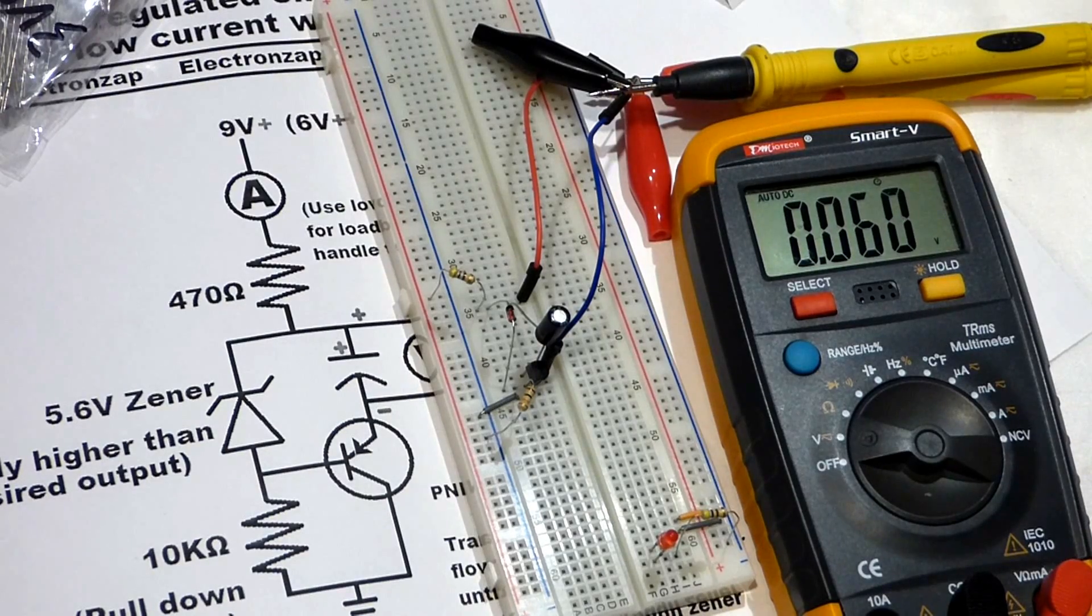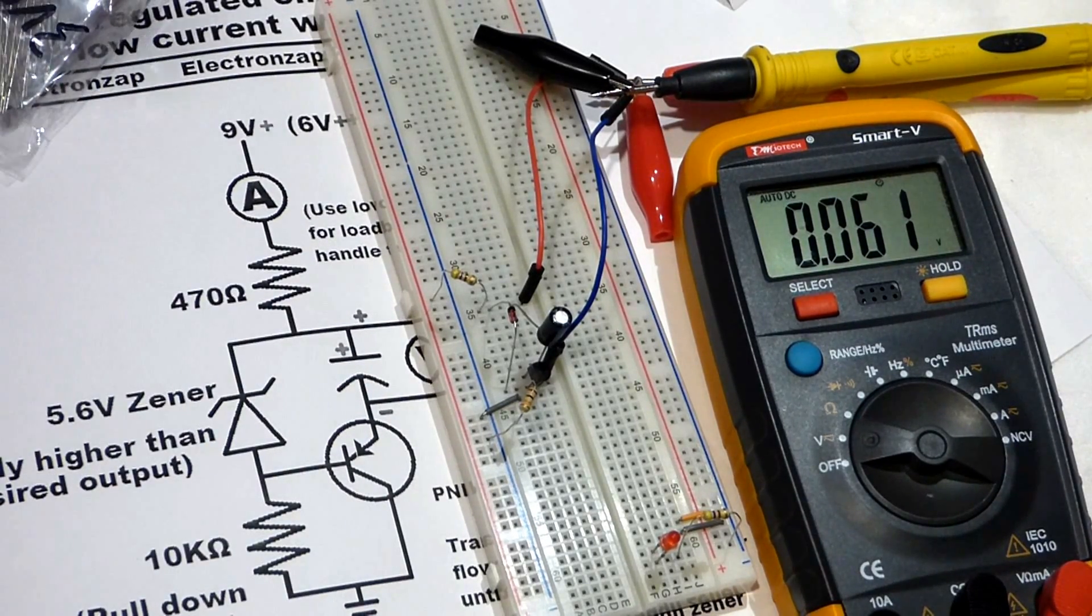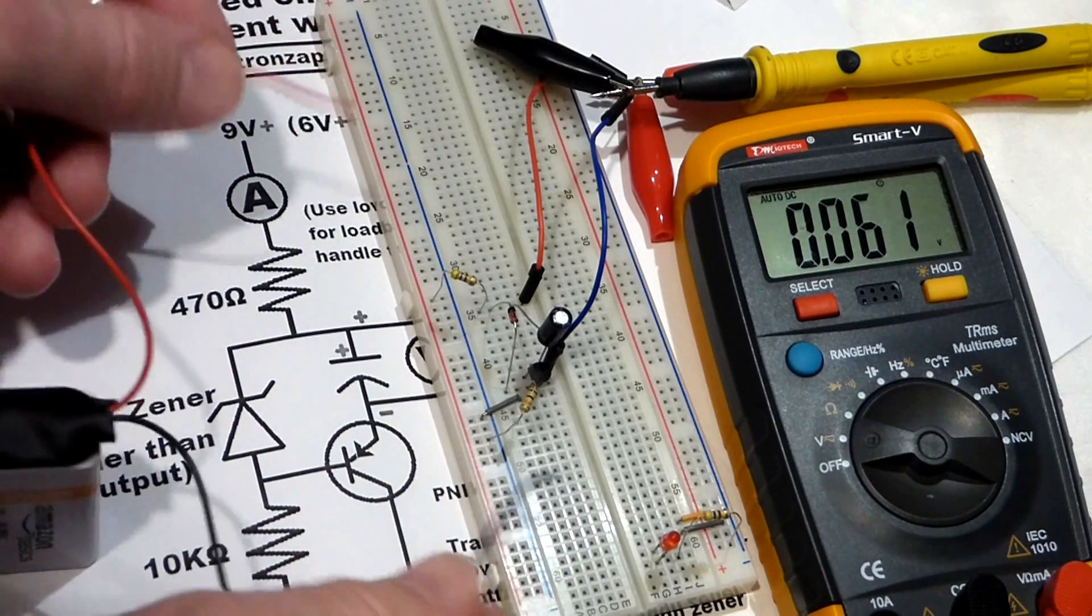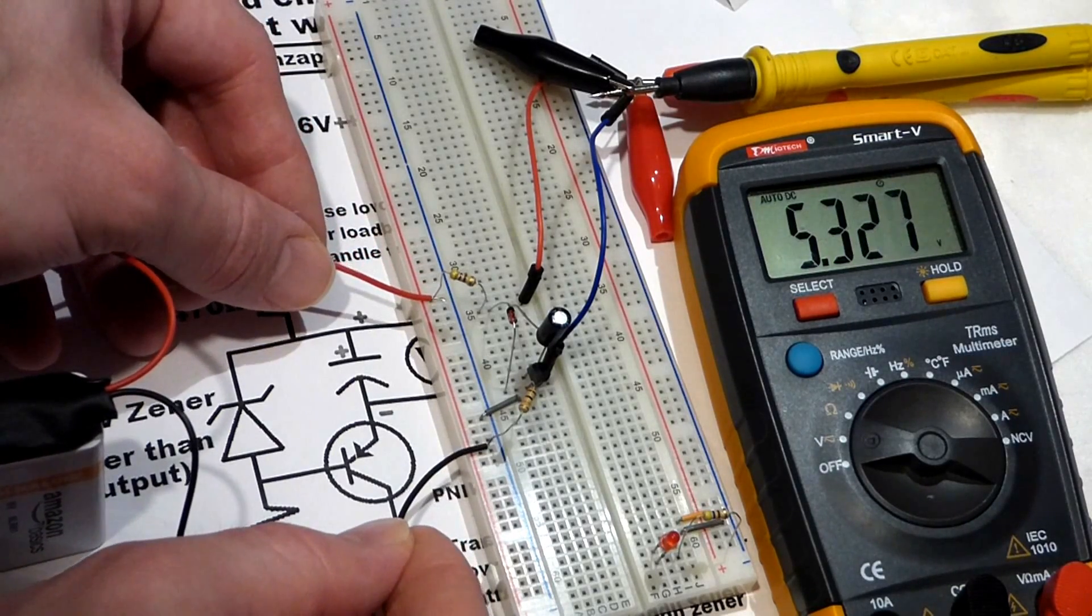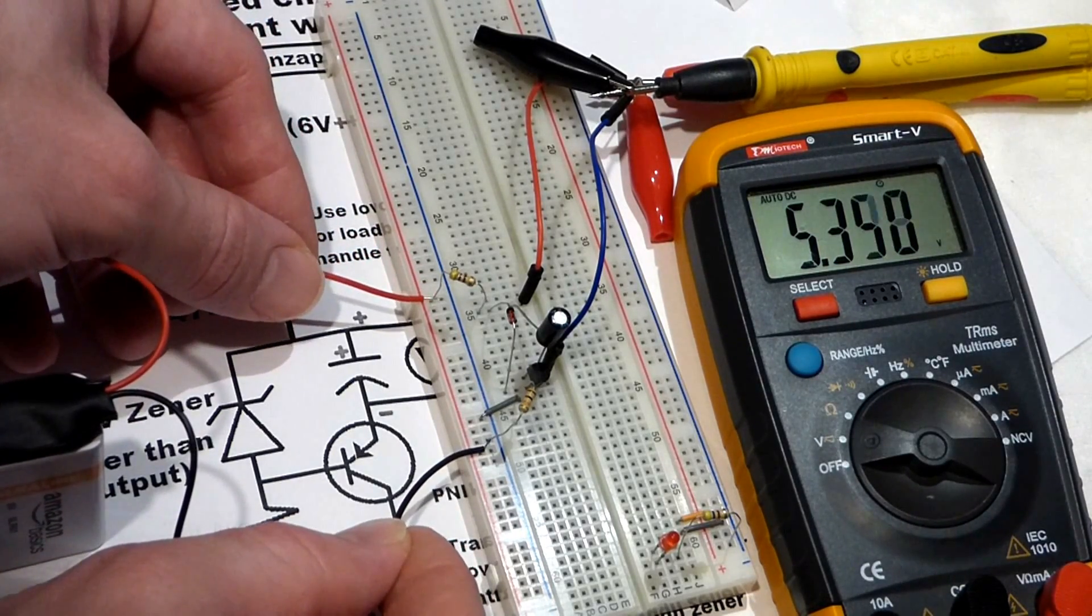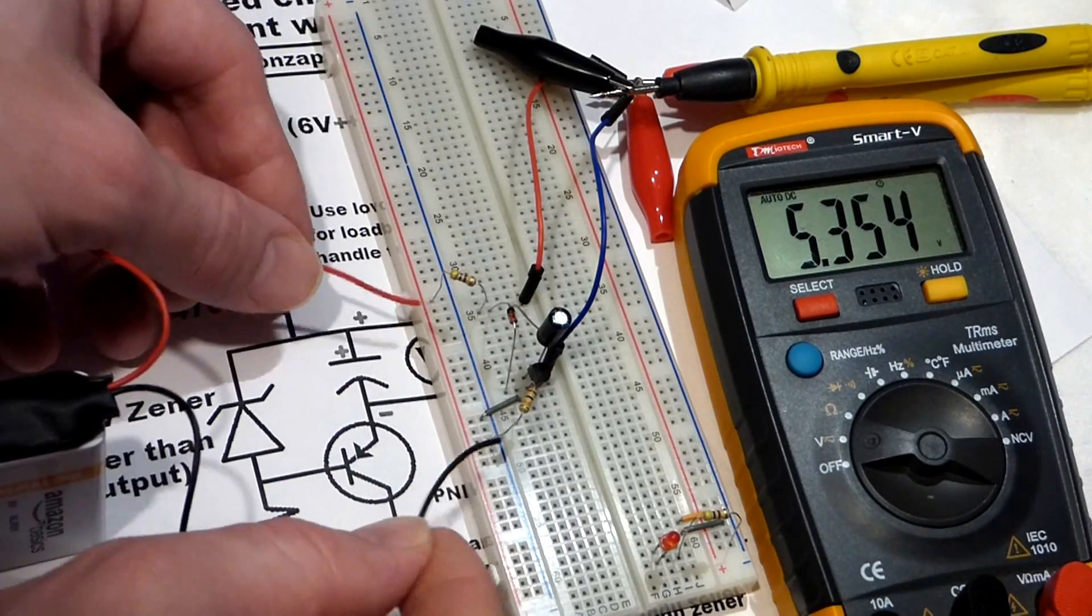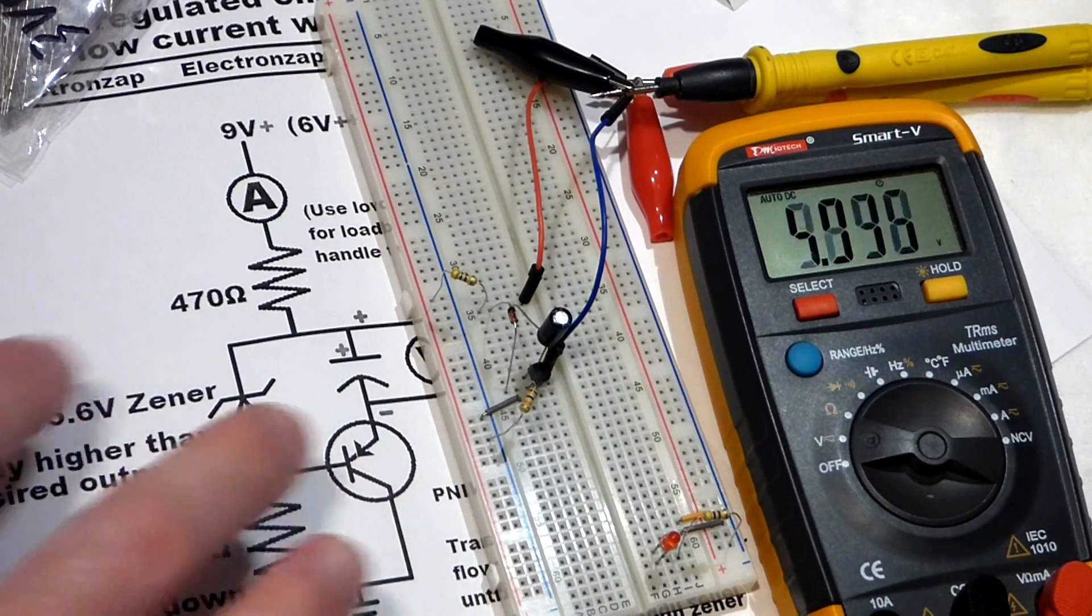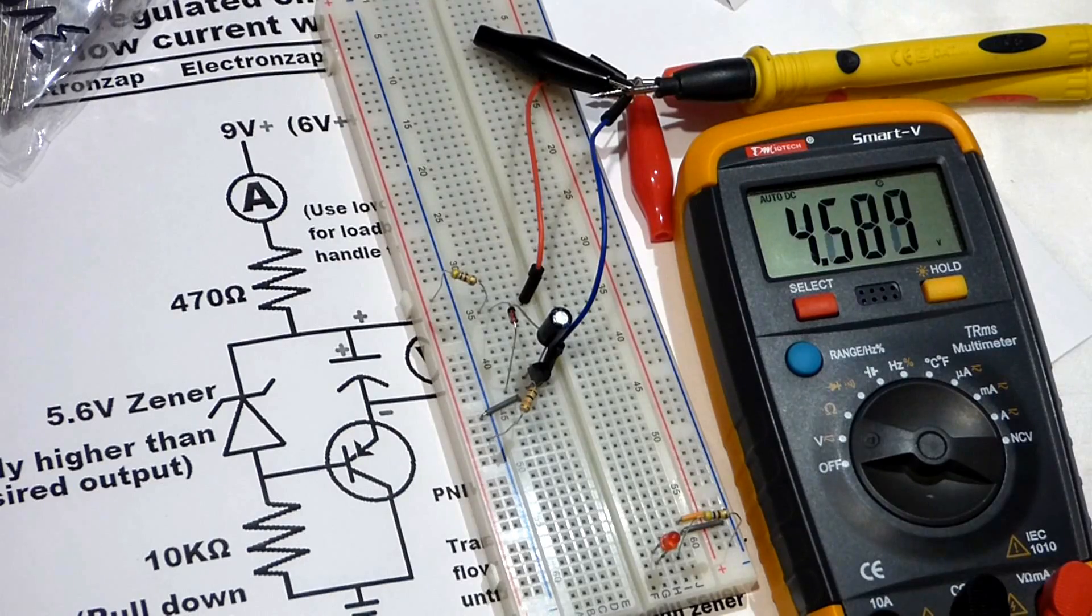When I apply the 9 volt battery, which dropped down to about 8.5 now, you see the capacitor stops charging at about 5.3 volts. This was a 5.6 volt zener—we could use a little bit lower voltage zener to get closer to 5 volts, but this is good enough. This was just a prototype circuit. All these components can be adjusted and changed.